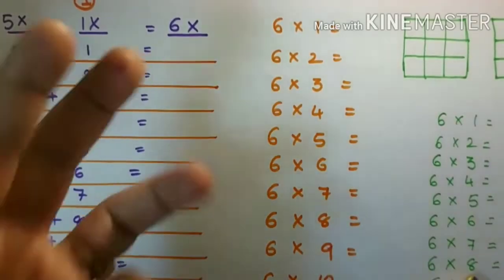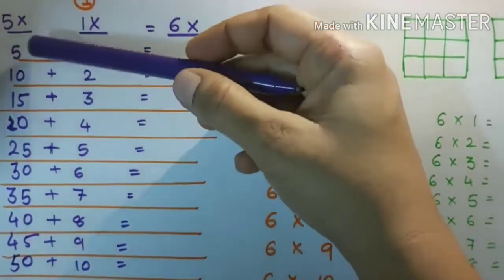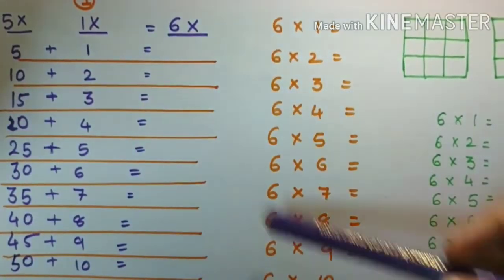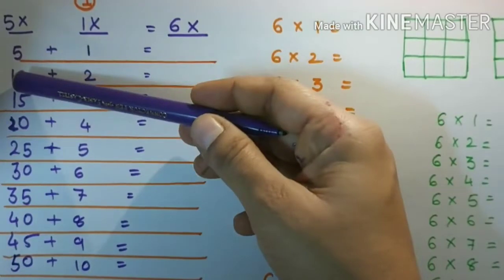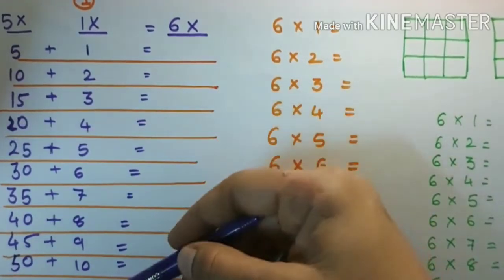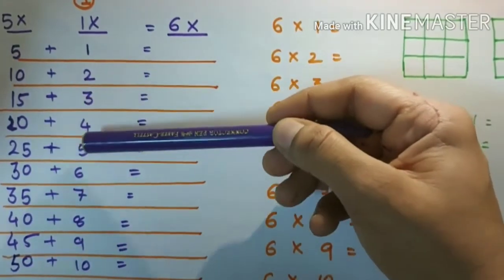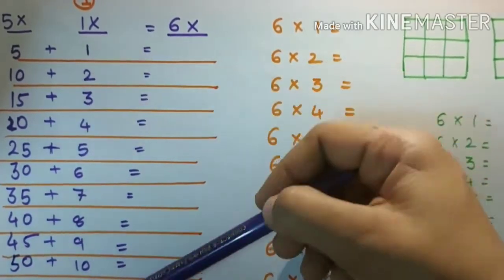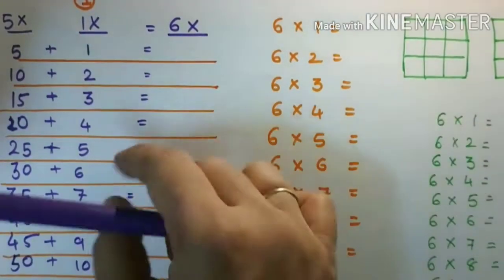We have three tricks for the table of six. In the first method, write down the table of five: five ones are five, five twos are ten, five threes are fifteen, five fours are twenty. And here write the table of one: one one is one, one two is two, one three is three, one four is four. Now just add both numbers and you will get your answer.